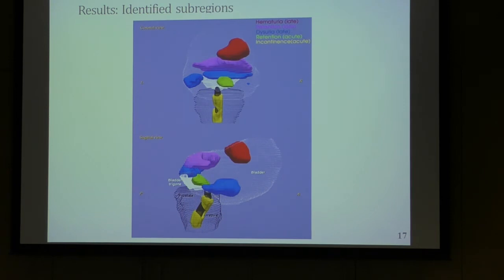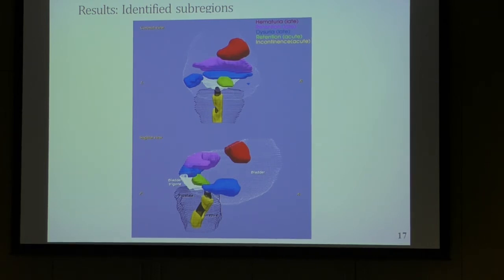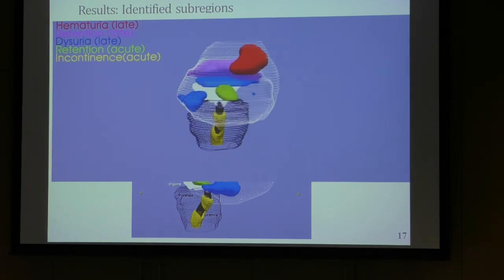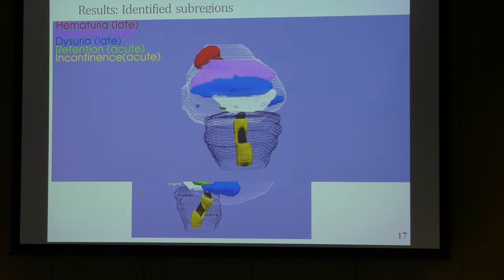These are the main results — the sub-regions we found for five different symptoms. They are mostly located in the posterior part of the bladder, close to the bladder trigon, which is an important structure as shown in the literature. We also found that the dose to the urethra was associated with urinary toxicity. And to our surprise, we found a sub-region on the superior part, which is expected to be the low-dose region. I also have a 3D animation of the location of these sub-regions.